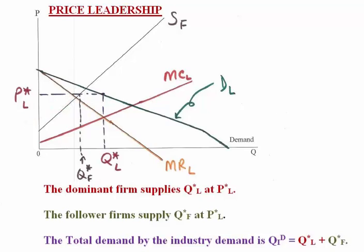It is as if the followers were in a perfectly competitive industry where the demand curve is horizontal for each firm, or the price is given. Therefore, the marginal revenue to each of these firms is equivalent to the price, and the marginal cost is their supply curve. So they supply based on the intersection of their supply curve and the price given by the leader. We have the leader's demand curve as a derived demand curve.